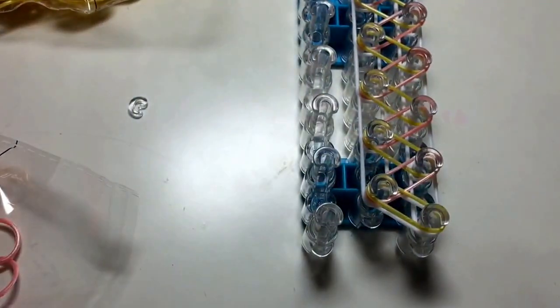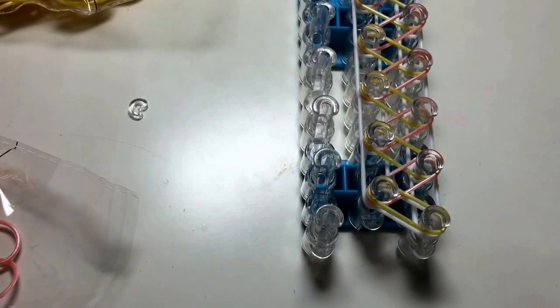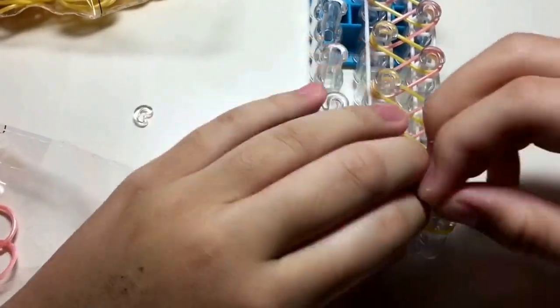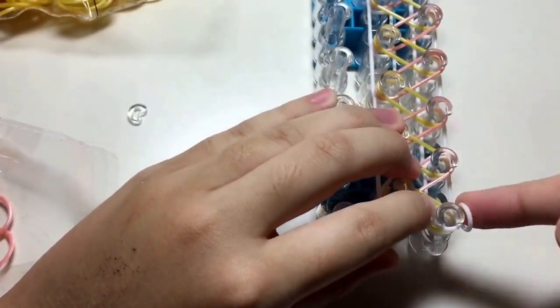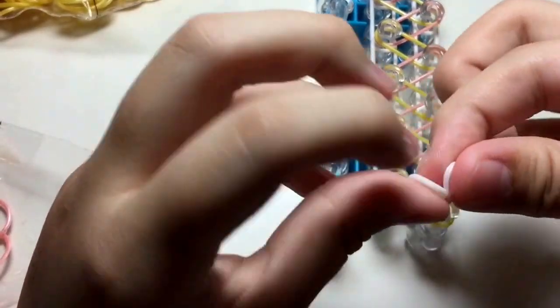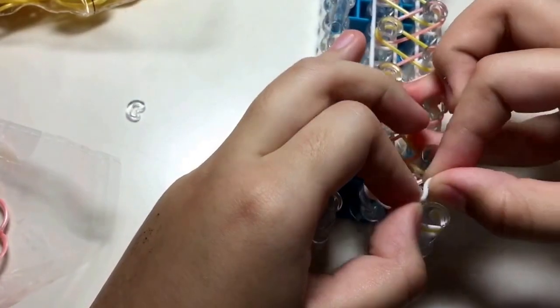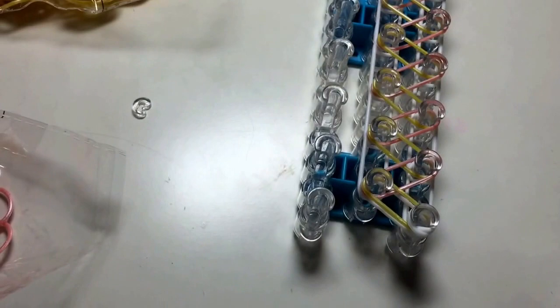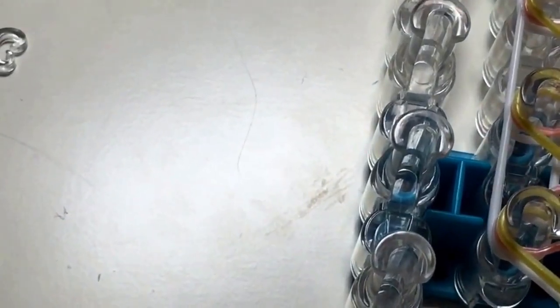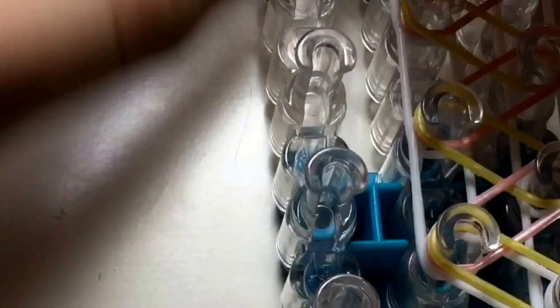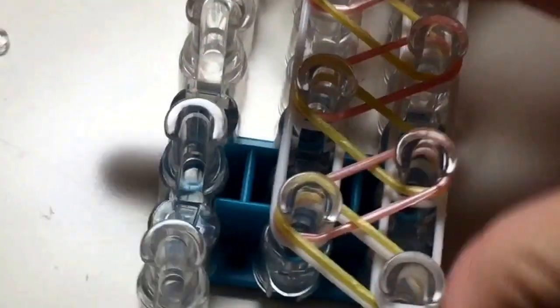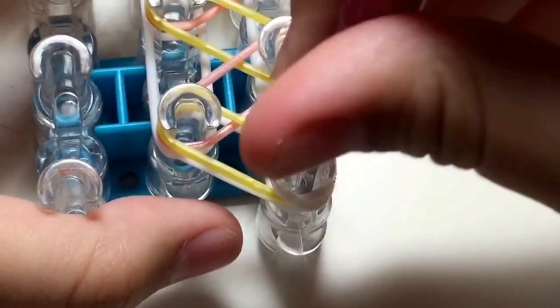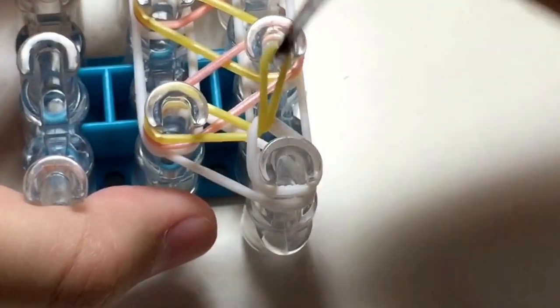Now we can start the hooking process, but first we need to put our cap band. Make a cap band like that. Now we can start the hooking process. The hooking process is very simple. You're just going to push back the cap band, get the top colored band, and hook it forward.